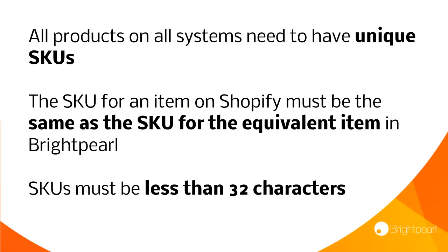All products on all systems need to have unique SKUs, and these SKUs need to be the same across all of your different systems. The SKU, the stock keeping unit, is the unique identifier for all of your products, and they need to be less than 32 characters to work with Brightpearl. So if your Shopify store is not set up like that, that's the first thing you need to do.